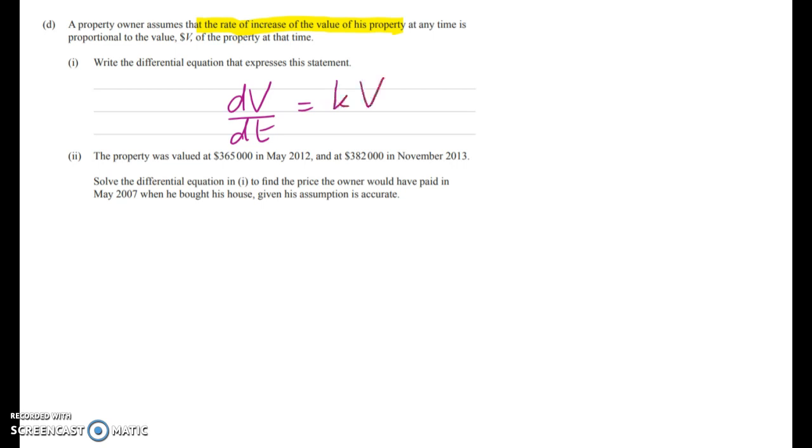Now the property valuations are given to us. In May 2012 the property was worth this much and in November 2013 the property was worth this much. But he bought the property in May 2007. So let's work with months and call t equals 0 May 07.